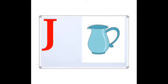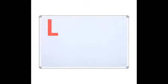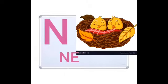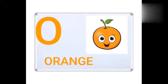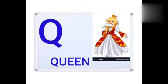J for jug, K for kite, L for lion, N for monkey, N for nest, O for orange, B for parrot, U for cune, R for rose.